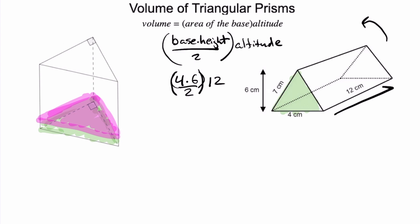That's this dimension, thinking we rotated it so the green part's on the bottom. So we have 24 divided by 2 times 12, or 12 times 12, or 144 cubic centimeters would be our volume.